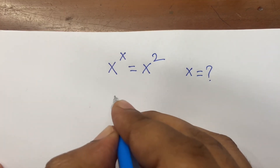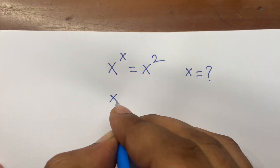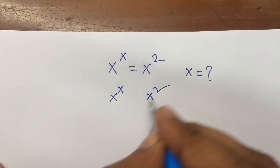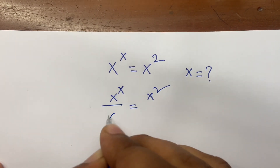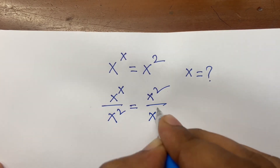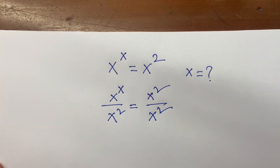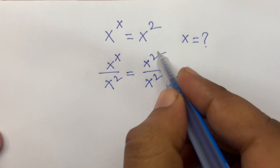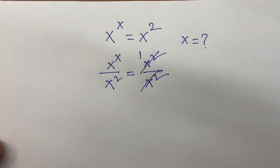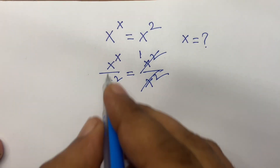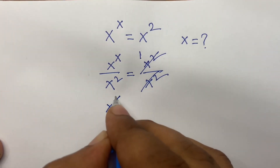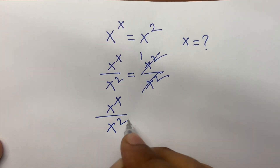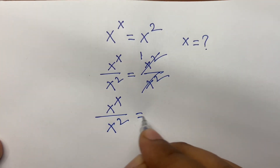First of all, here is x to the power x and this is x squared. I divide both sides by x squared. This x squared and x squared is cancelled, so this is 1. I can say here is x to the power x divide x squared equal to 1.